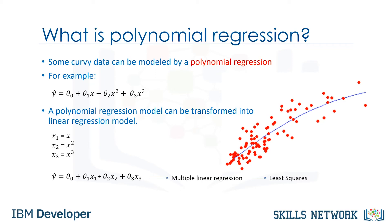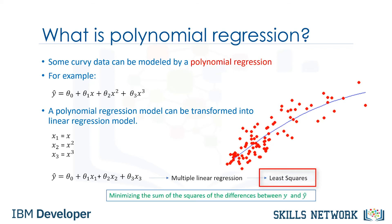Therefore, polynomial regression models can be fit using the method of least squares. Least squares is a method for estimating the unknown parameters in a linear regression model by minimizing the sum of the squares of the differences between the observed dependent variable in the given data set and those predicted by the linear function.